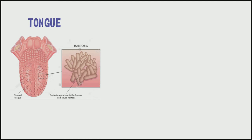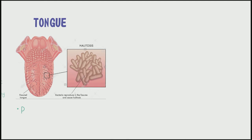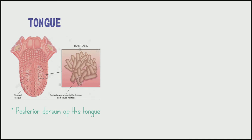After tooth brushing and flossing, the most important step is tongue cleaning. The tongue surface is the main odor-forming site in the mouth. The anterior part of the tongue is rougher due to innumerable depressions, which are ideal niches for bacterial adhesion and growth. The bacterial load on the posterior dorsum of the tongue is the principal origin for malodorous compounds, as this area is difficult to reach. Interestingly, the role of tongue coating in malodor production resides more in its composition than its thickness or extent.